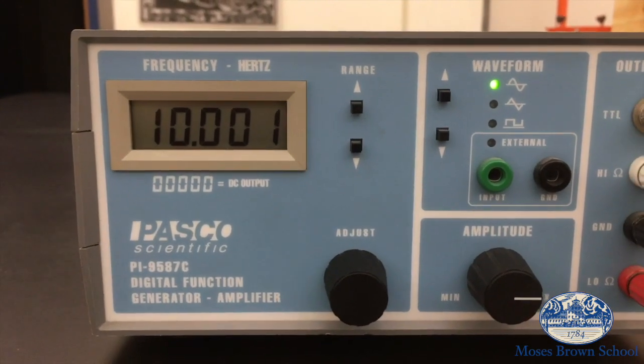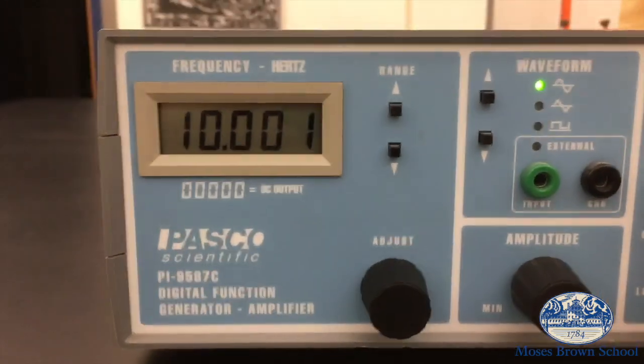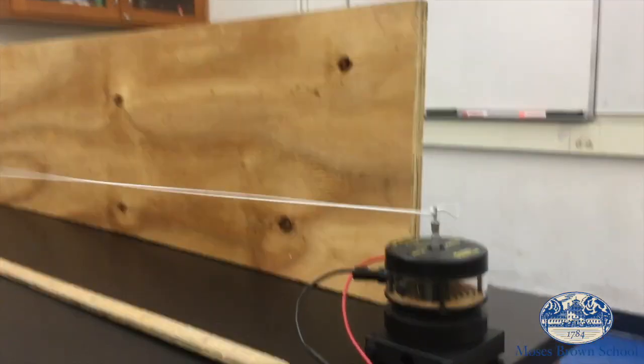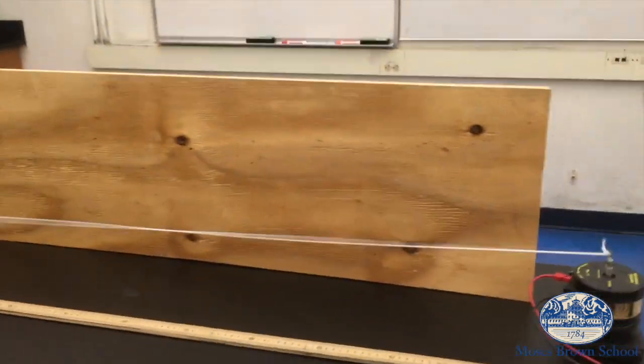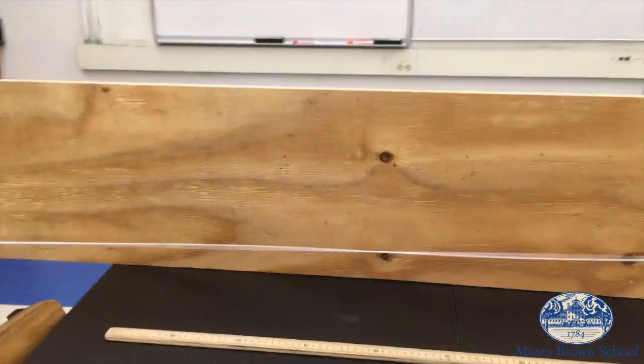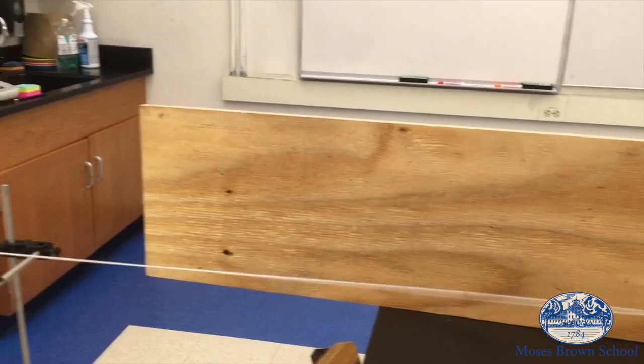Now I've adjusted the frequency to almost exactly 10 Hertz and what you will see if you now look at the vibrating string is there's not much in the way of an obvious pattern in the motion. It's just sort of vibrating randomly at this particular frequency.